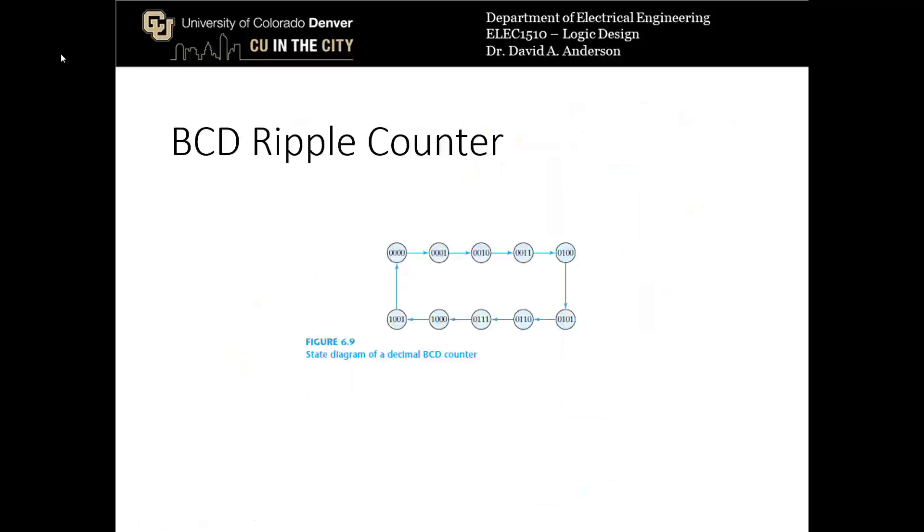So while designing a counter that counts up in binary is nice, it's not exactly that practical because we work in decimal numbers rather than binary numbers. So if you wanted to make a clock, for example, that counted from 0 to 9 and then stopped there and then would start over from 0 like we're used to in binary numbers, you would instead want to make a BCD ripple counter, so binary coded decimal ripple counter.